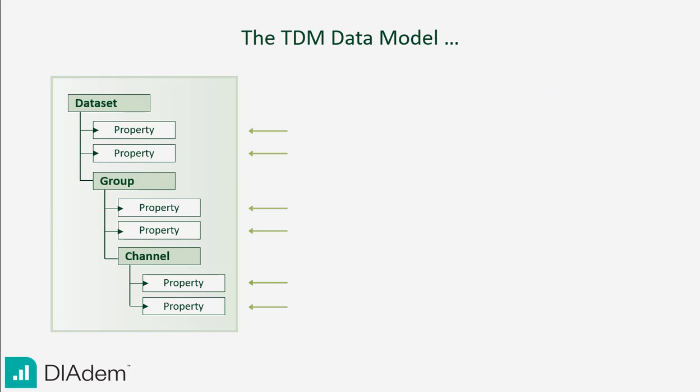Specific properties are automatically saved as name-value pairs on each level. For example, the file name or author on file level, and the channel name and unit on channel level.